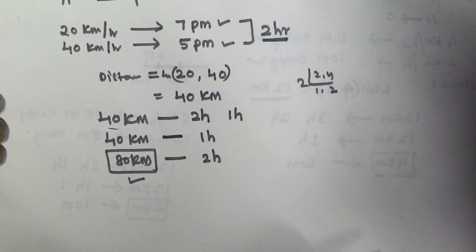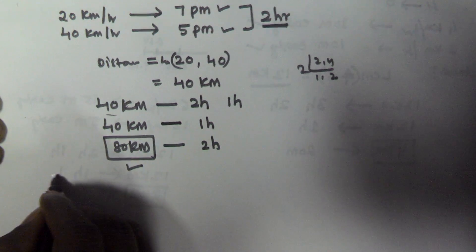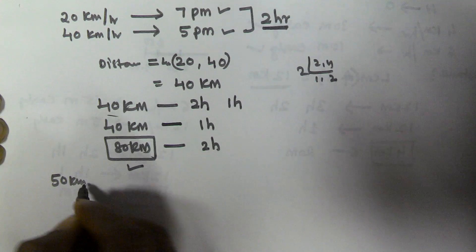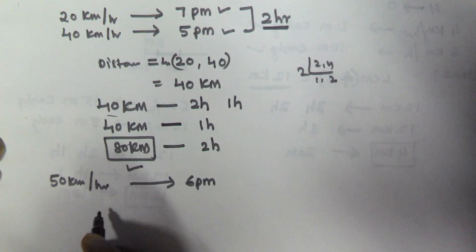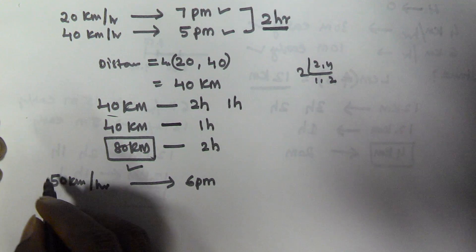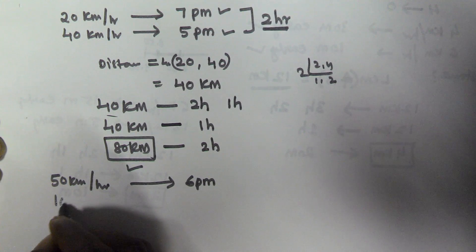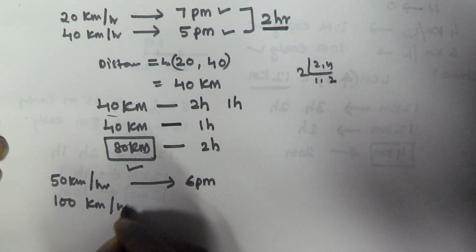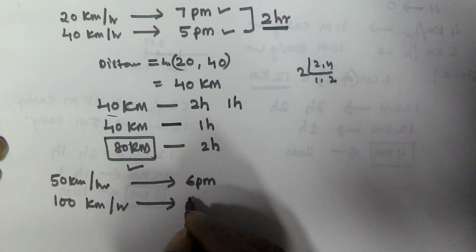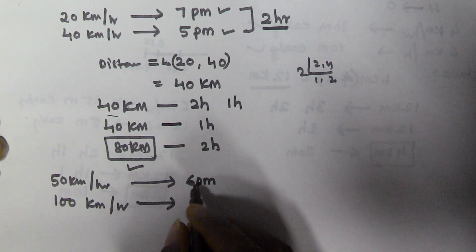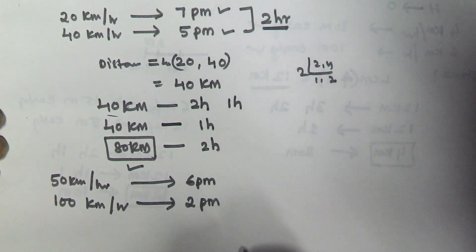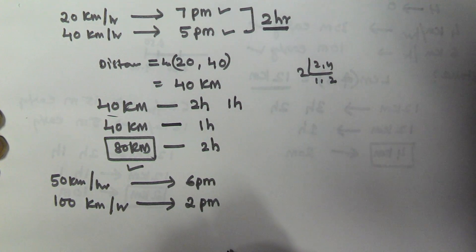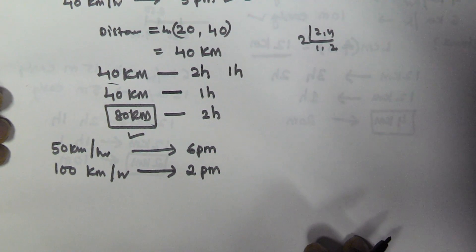Let us see another example. On the first day he is travelling with 50 kmph and reached office at 6 pm. On the second day he travelled with 100 kmph and reached office at 2 pm. Find the distance between his home and office.